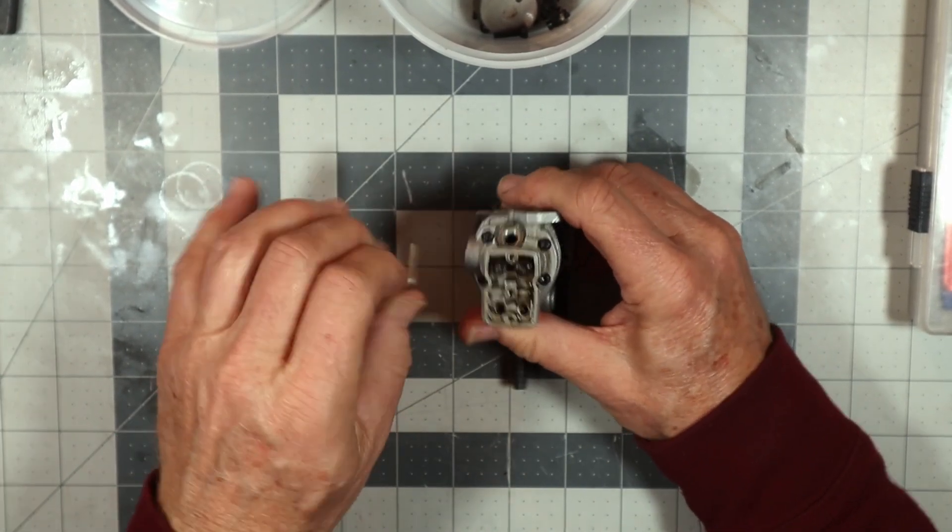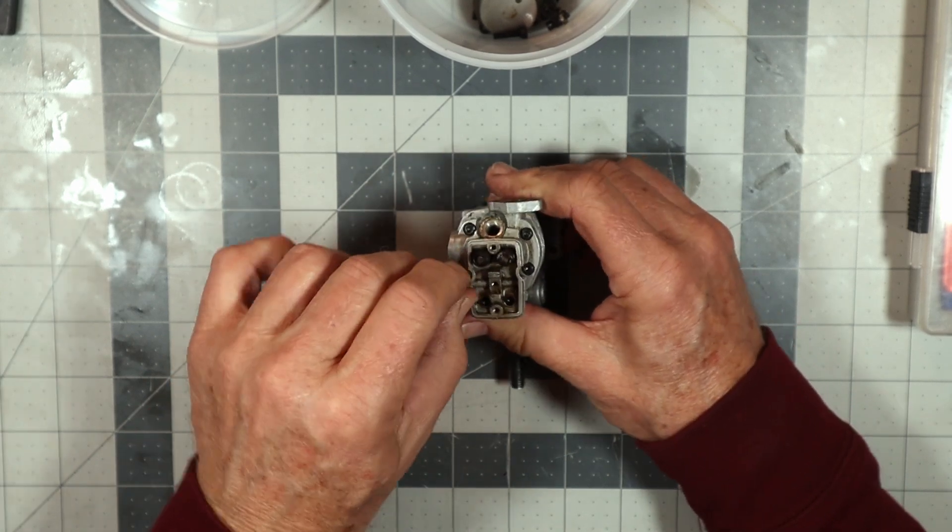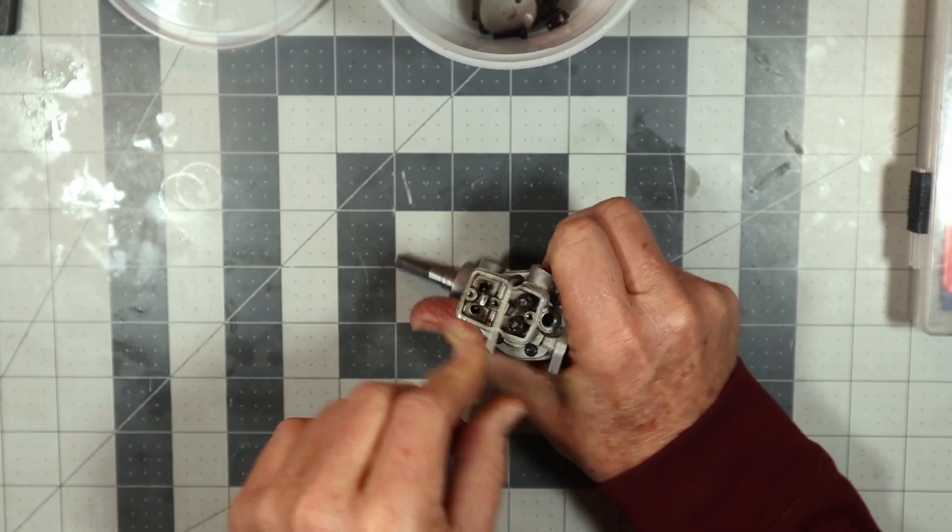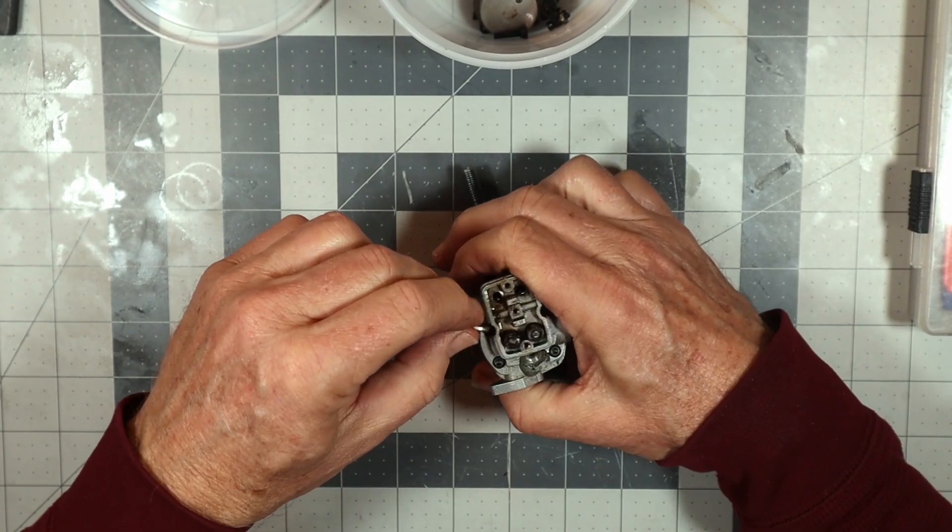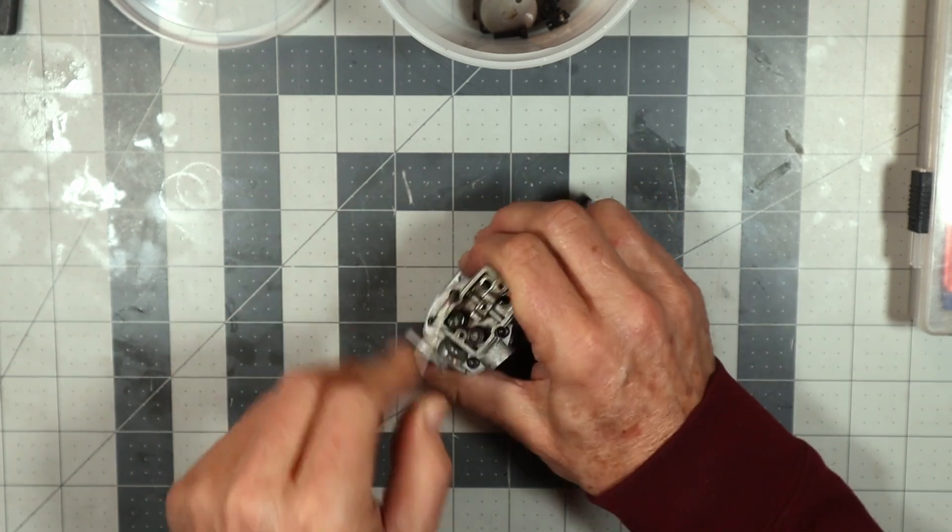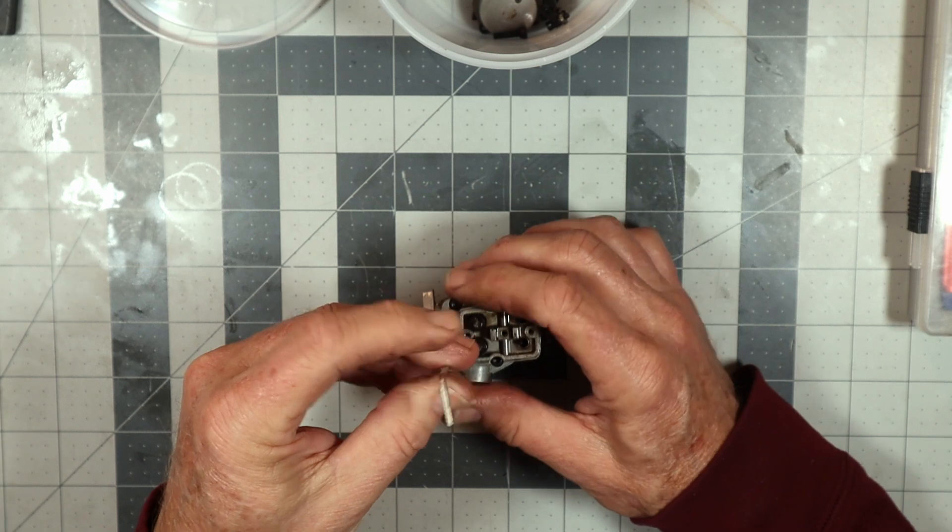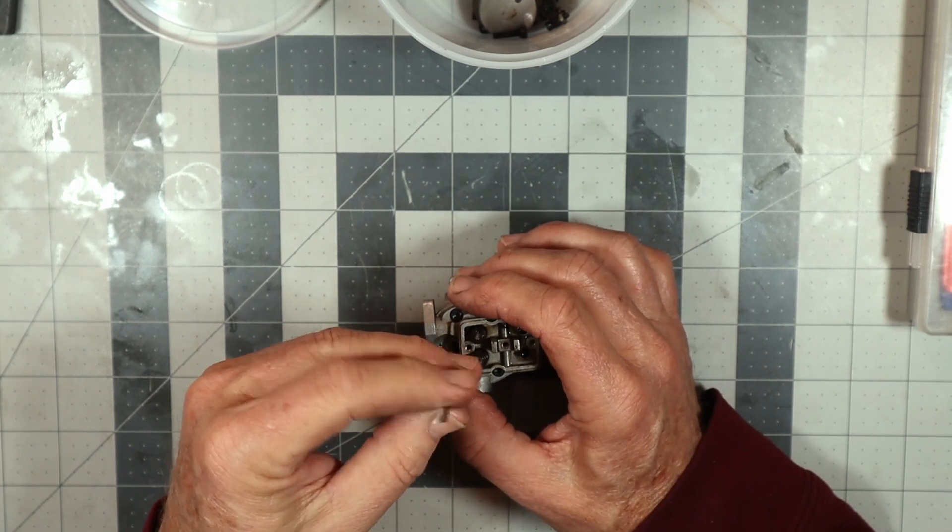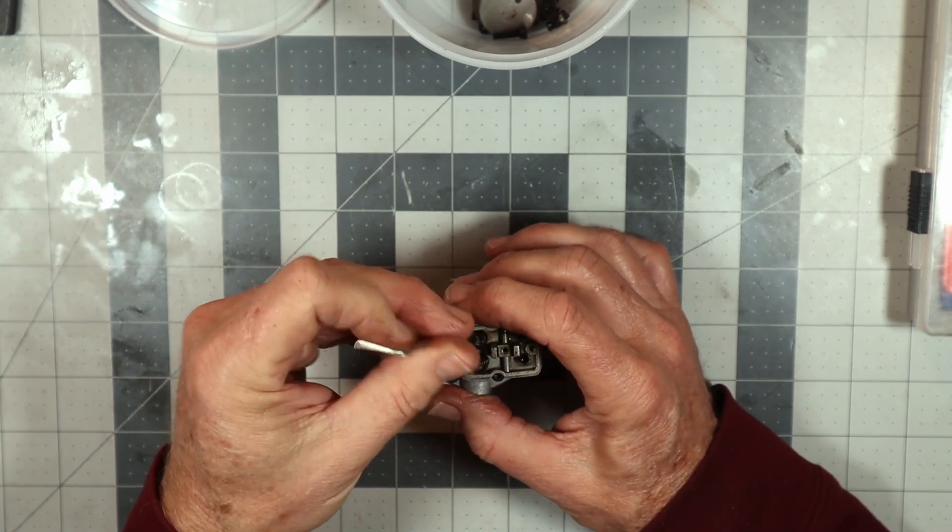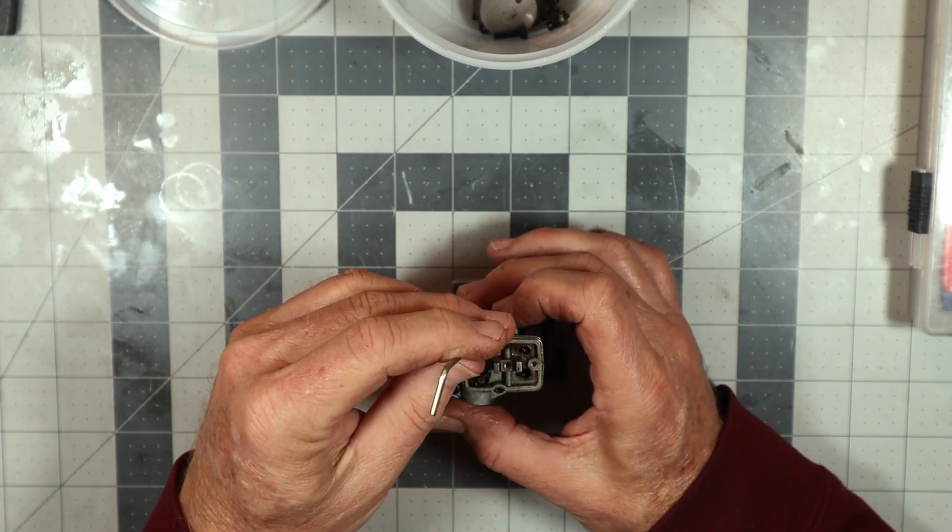So let's just continue on here with the head. Now I think this is such a low time engine that I don't really know that it's going to be necessary for me to drop the valves on this. We'll take a look at the underside of the head and see. It's just such a low time engine that I don't believe there's really going to be any need for me to drop the valves on this.